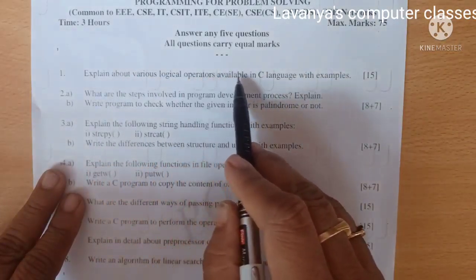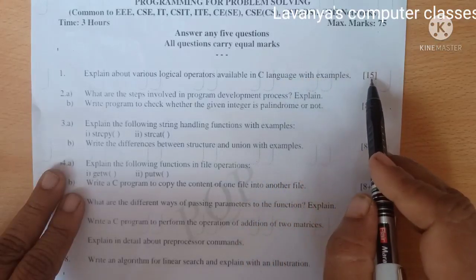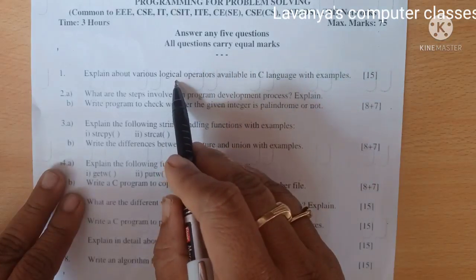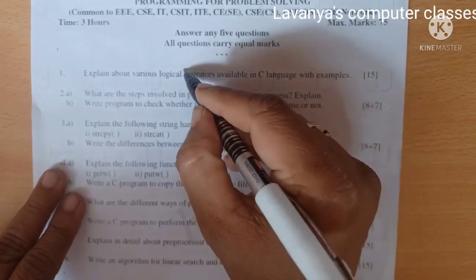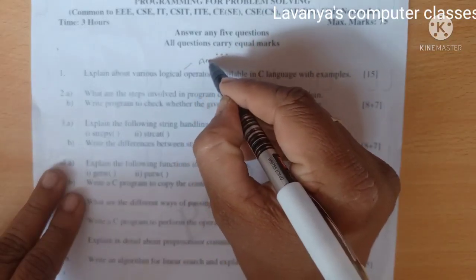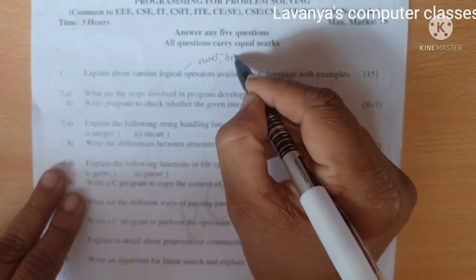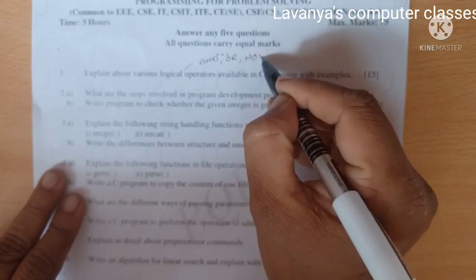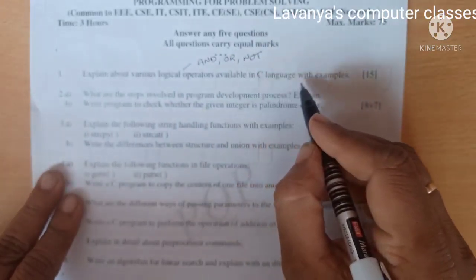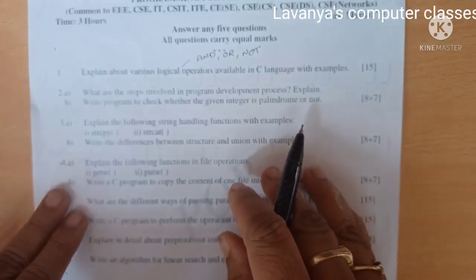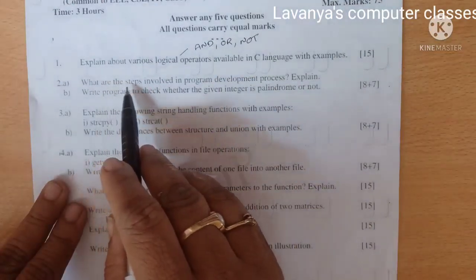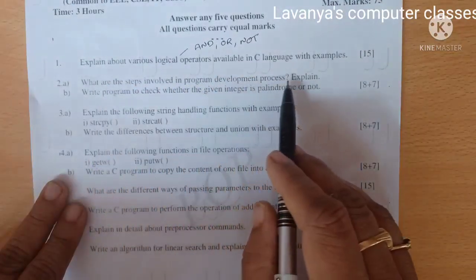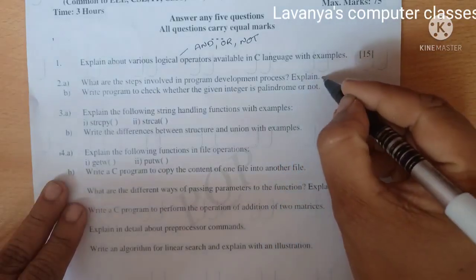The first question is explain about various logical operators available in C language. Not only write logical operators, but explain what are the logical operators - AND, OR, NOT. Explain each and every operator with truth tables and also take some examples. This is for 15 marks. If possible, write with example also.